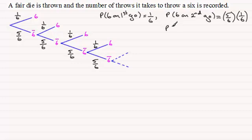Now, the probability of getting a six on the third go, well, what's going to happen is, essentially, we don't get a six on the first and second throws, but we do on the third throw. So, what we're going to have is five-sixths times five-sixths times one-sixth, which is really five-sixths squared multiplied by one-sixth.